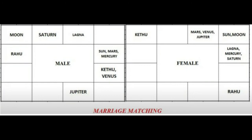Similarly, checking the girl's side: the girl's seventh lord is Saturn, the third lord is Mercury, and the eleventh lord is Venus. Saturn and Mercury are placed in kendra, Saturn and Venus are placed in 3-11, and Mercury and Venus are placed in 3-11. So kendra and 3-11 configurations are present, meaning the girl will have a good relationship with the boy's side relatives. This is not a problem.